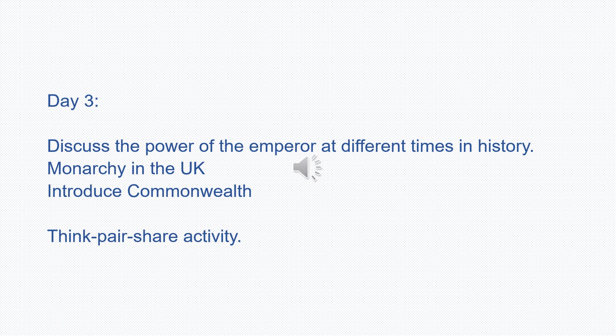On day three, we are going to discuss the similarities and differences between the power of the emperor in Japan at different times in history. We will also start discussing the monarchy in the UK, introduce the Commonwealth, and have a think-pair-share activity where we think of reasons why the monarchy may be popular or unpopular.